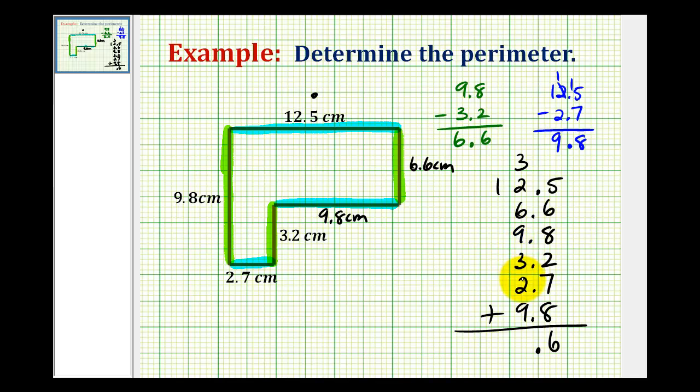Plus 9 is 34, carry the 3, and we have 3 plus 1 is equal to 4. So our perimeter is 44.6 centimeters.